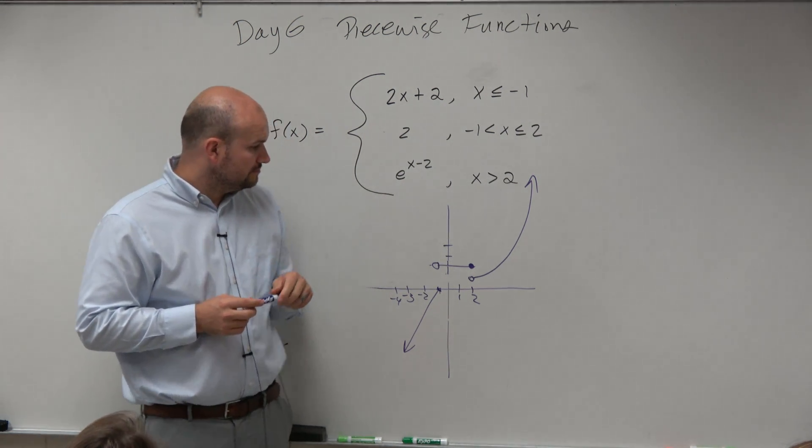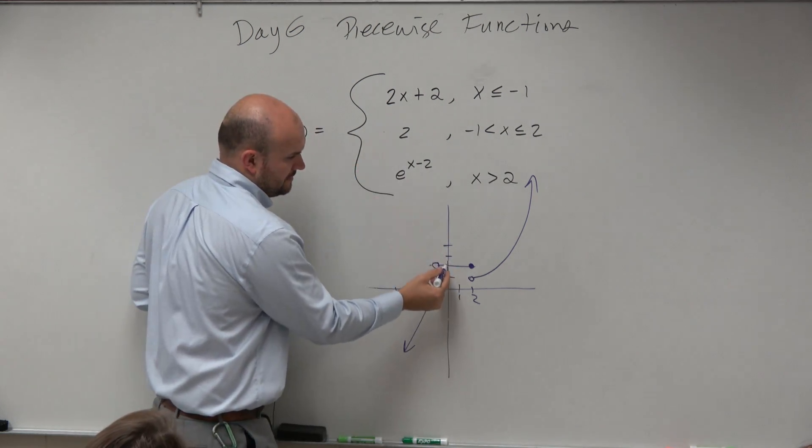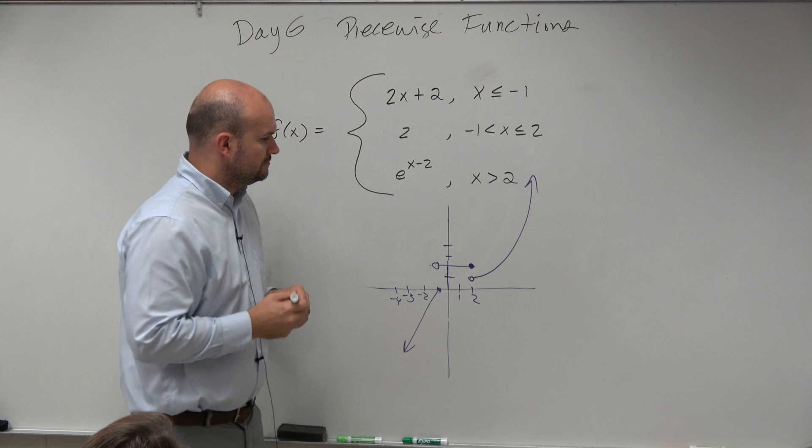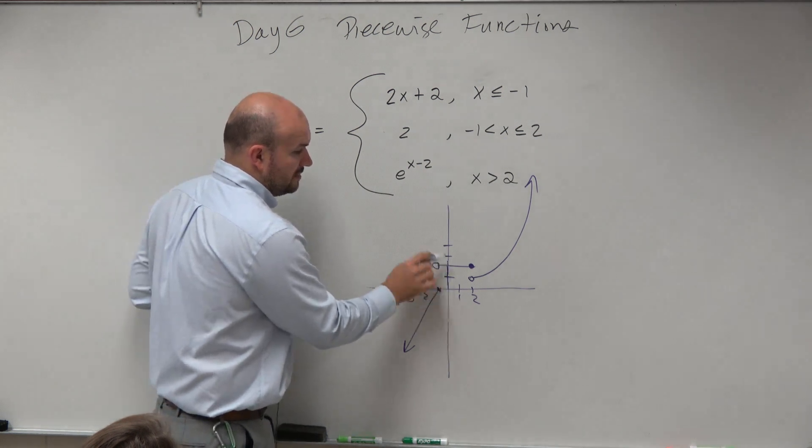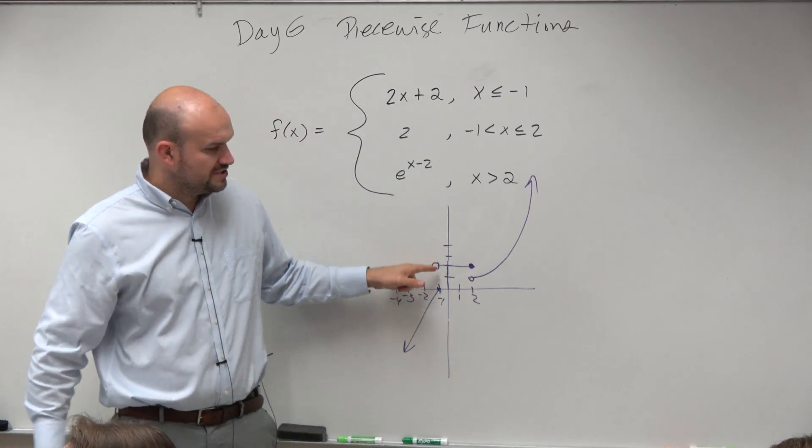Is that third line, is that at 1 on the y? It's at 2. Like the height? Negative 1, 2. Okay.